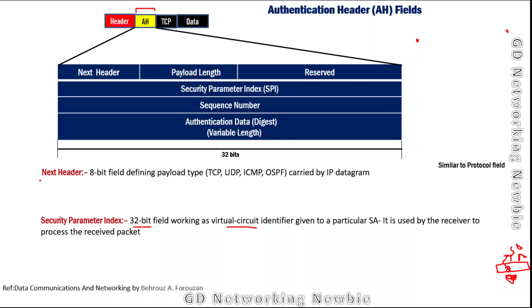The second field in the Authentication Header is the Next Header. This is an 8-bit field that defines what type of payload is carried in the packet. The packet could be carrying TCP, UDP, ICMP, or OSPF traffic — this is identified in the Next Header field.